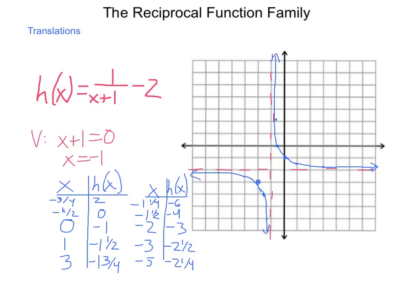The left branch is in quadrant 3 of our new axes as well as quadrant 3 overall. When we have h and k values, they simply change and make a new framework for us to build our graph around. The dotted lines for the asymptotes are certainly helpful for drawing this out.